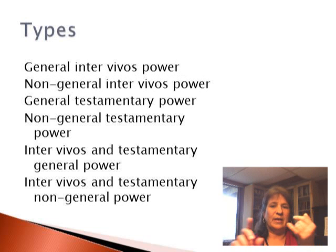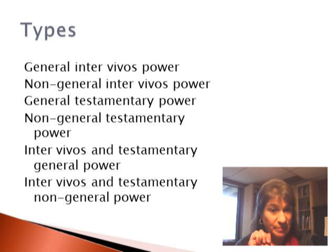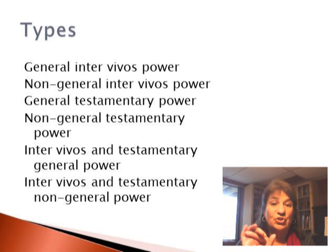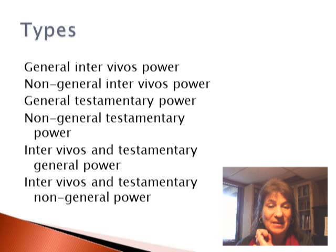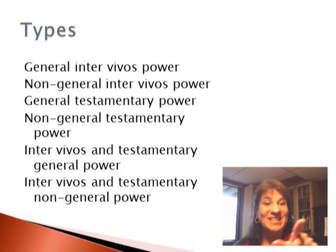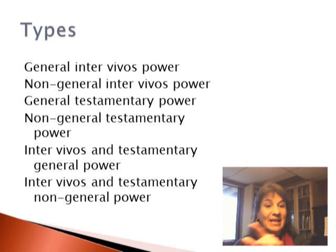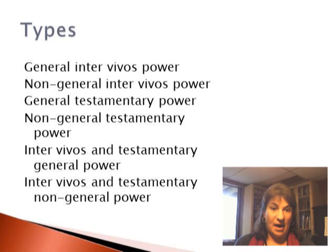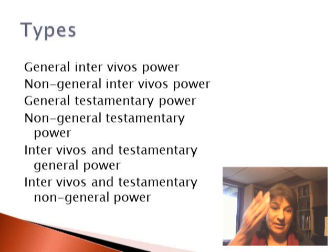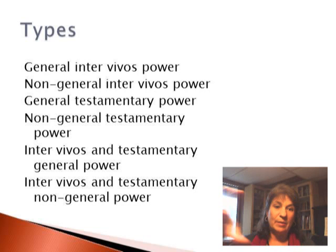Think about all the different kinds — we can mix and match these. We could have a general inter vivos power of appointment, a non-general inter vivos power, a general testamentary power, a non-general testamentary power, an inter vivos and testamentary general power, or an inter vivos and testamentary non-general power of appointment. So we need to specify how the donee can exercise it — inter vivos or testamentary — and we need to specify who it can be appointed to.